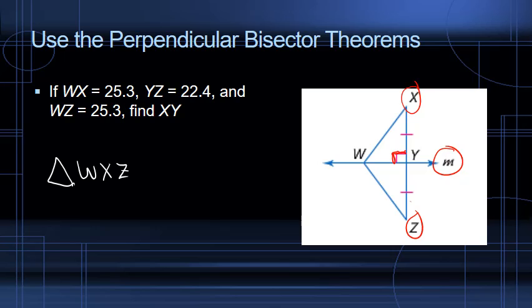Let's look at what we have here. If WX is 25.3, that's the length of that segment, and YZ is 22.4 — YZ is right here — and WZ is 25.3, find XY.